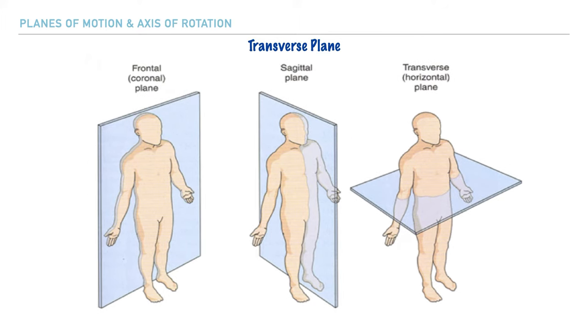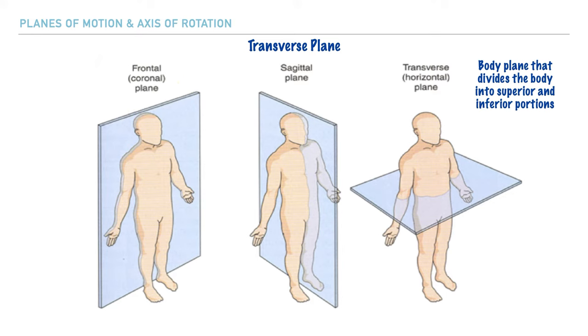Next is the transverse plane of motion, and it's responsible for dividing the body into superior and inferior portions. Just as we've done with the previous planes, we can label these areas as well.